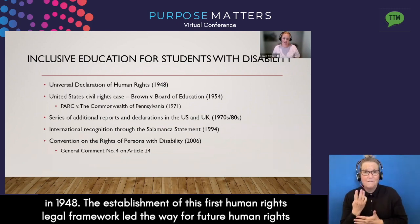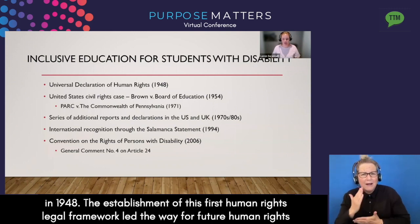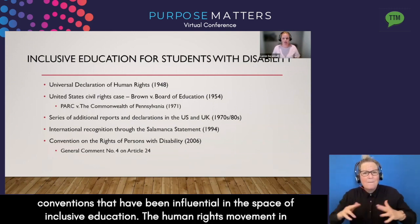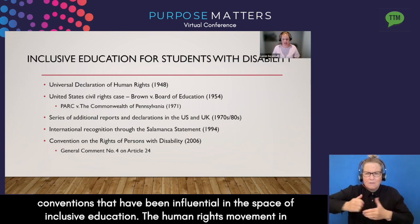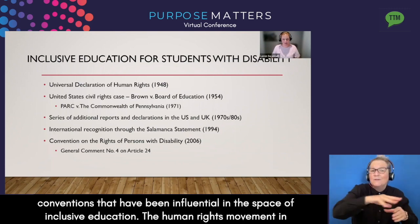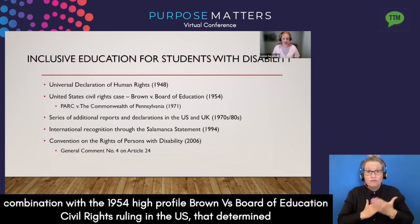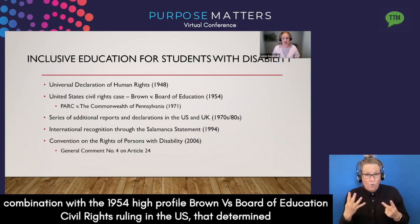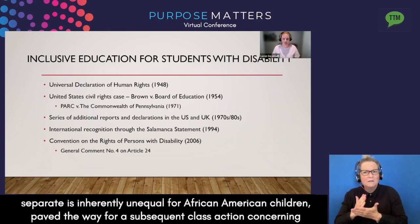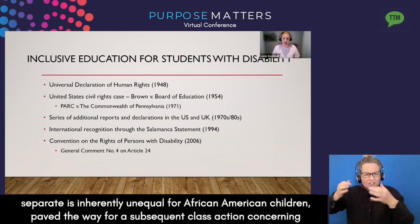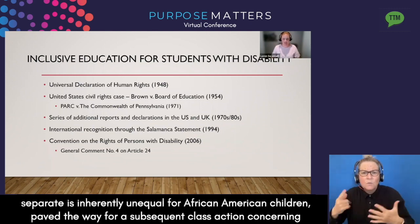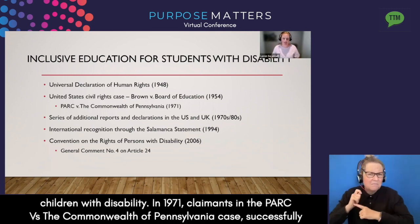The establishment of this first human rights legal framework led the way for future human rights conventions that have been influential in the space of inclusive education. The human rights movement in combination with the 1954 high profile Brown versus Board of Education civil rights ruling in the US — that determined separate is inherently unequal for African American children — paved the way for a subsequent class action concerning children with disability.